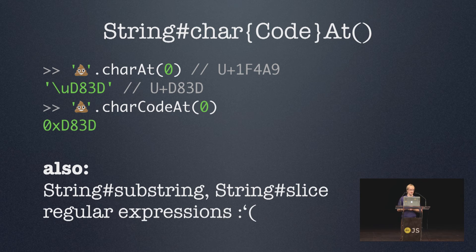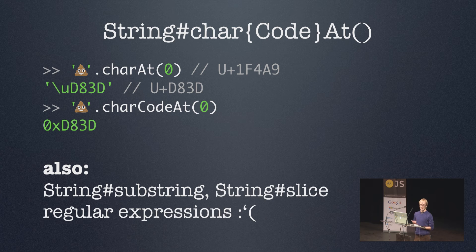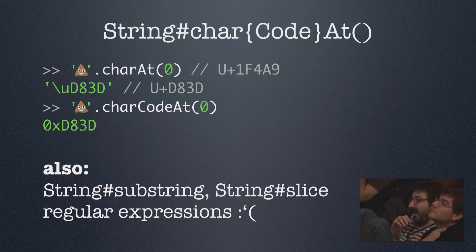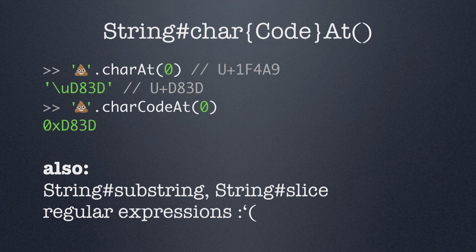Another example is the charAt and charCodeAt methods on the string prototype. If you want to use charAt to retrieve the first symbol in a string that only contains the pile of poo character, you wouldn't get the character of the pile of poo symbol — you would only get the first surrogate half, because JavaScript considers that to be a separate character. Similarly, if you use charCodeAt to retrieve the code point of the first symbol in the string, you would only get the code point of the first surrogate half, not the code point of the pile of poo character. And there are many more examples of this crappy behavior, like the substring method, the slice method, and also regular expressions — which are a huge pain whenever you need to support astral characters, simply because each astral symbol is considered to be two separate characters in JavaScript.